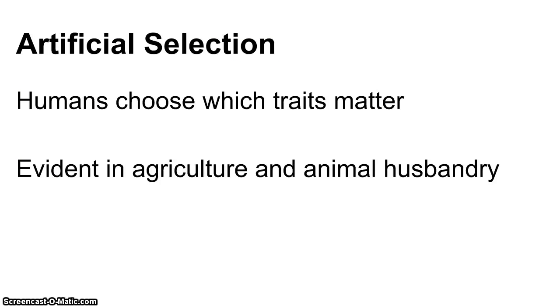We can also see evolution through artificial selection, where humans choose which traits matter. This is especially evident in agriculture and animal husbandry, where humans take advantage of evolution to get traits they would like.